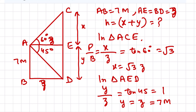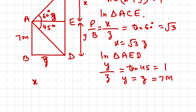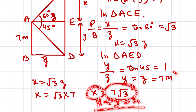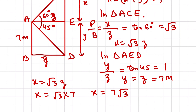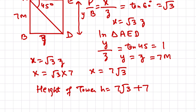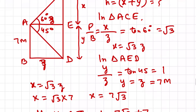Now x = root 3 × z = root 3 × 7 = 7 root 3. The height of the tower = x + y = 7 root 3 + 7 = 7(root 3 + 1) meters. This is the answer. You can leave it in root form, or substitute root 3 = 1.7 to solve further. This completes question number 12.